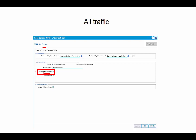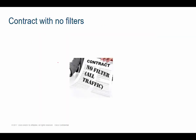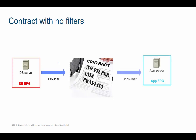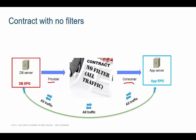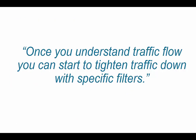If you apply this contract between two EPGs, regardless of who's the provider and who's the consumer of the contract, you're allowing all communication bi-directionally — in both directions. Then, once you start to understand what your traffic flow is, you can start to use real filters and tighten things down.